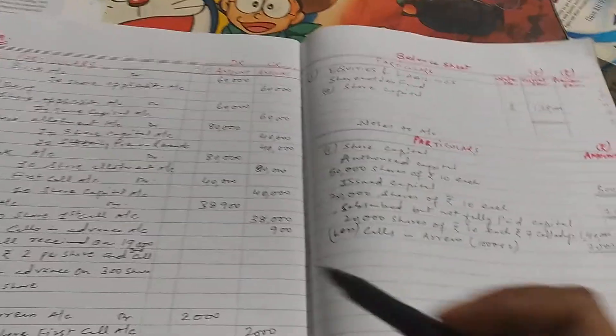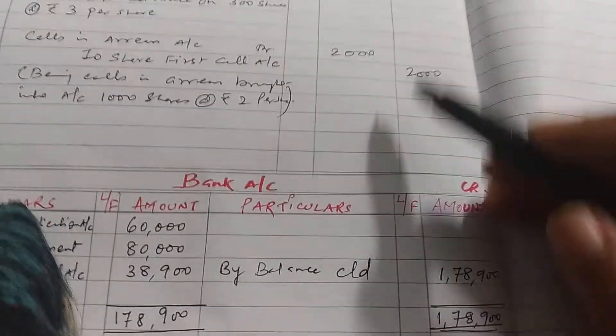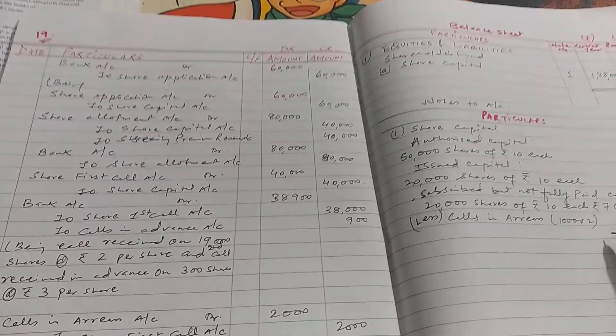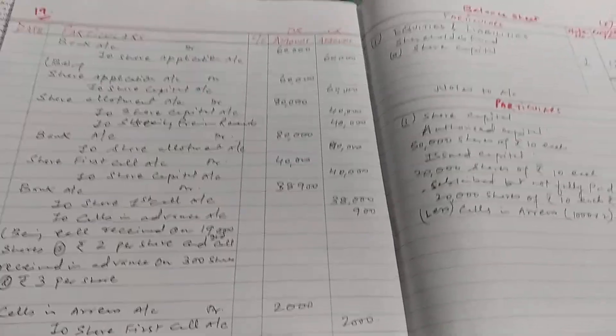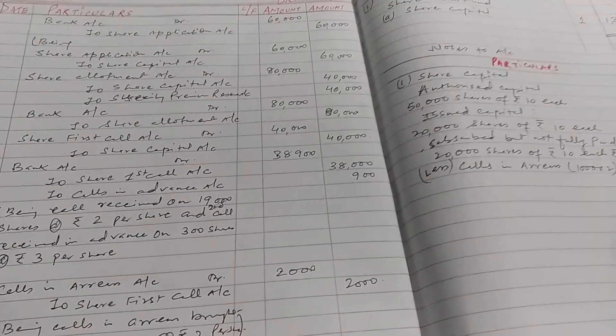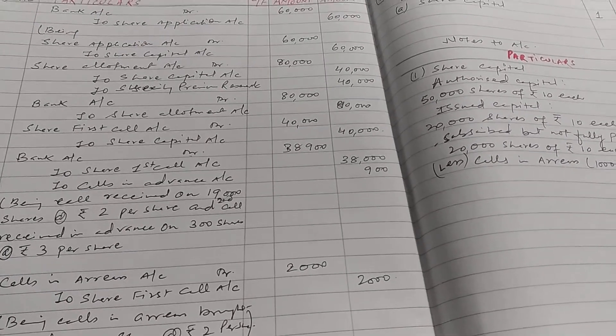We have done journal entry, then bank account, then balance sheet and notes to accounts. So I hope this is clear to you students. If you have any query you can ask through WhatsApp and try to practice more and more sums. Wait for the next video. Till then, goodbye. Om Namah Shivaya.